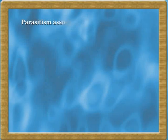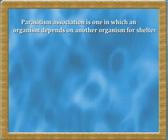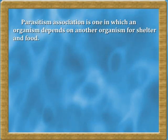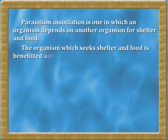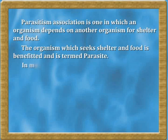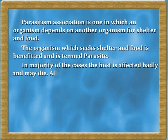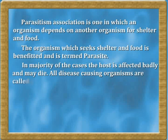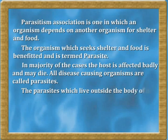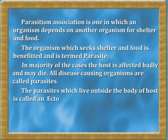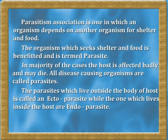Parasitism is an association in which an organism depends on another organism for shelter and food. The organism which seeks shelter and food is benefited and is termed as a parasite. In the majority of these cases, the host is affected badly and may die. All disease-causing organisms are called parasites. The parasite which lives outside the body of the host is called an ectoparasite, while the one which lives inside the host is called an endoparasite.